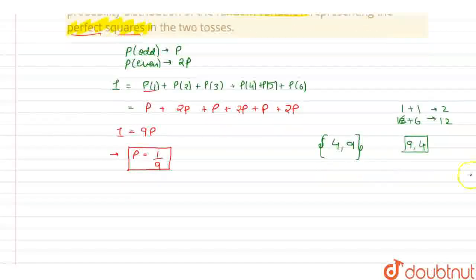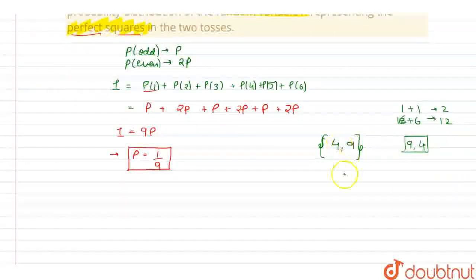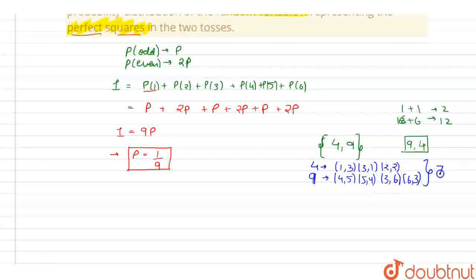Now we will see that 9 and 4 can occur in many ways. Let's take 4 first. 4 can come as 1,3 or 3,1 or 2,2 can occur. Similarly, for 9, 9 can occur as 4,5 or 5,4 or it can occur as 3,6 or 6,3. These are our only possible ways. There are total 7 possible ways in which a perfect square can appear.